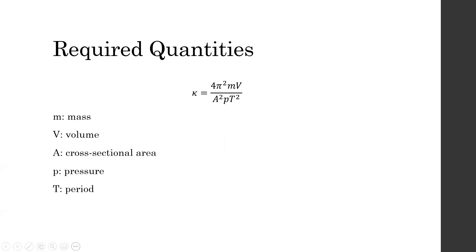This equation shows that, to determine kappa, we must know the values of the mass of the steel ball, the volume of air the ball is oscillating on, the cross-sectional area of the precision tube, the total pressure of the gas, and the period of oscillation.